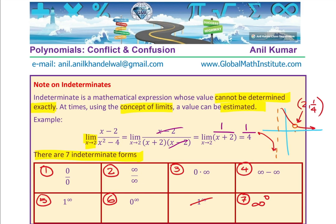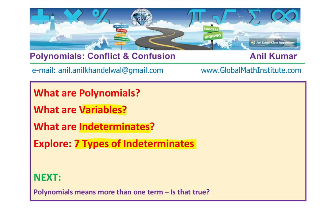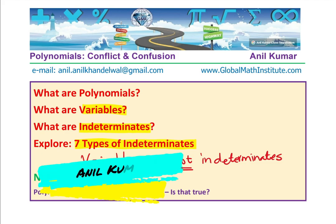Those who take up calculus and are looking into limits, they will definitely come across all these forms and they will know how do we handle these things. So now let's get back to our conflict. What we understand is that polynomials are defined with variables, no problems, but variables are not indeterminate. So we have seen that variables are not indeterminates. I hope this concept is absolutely clear.